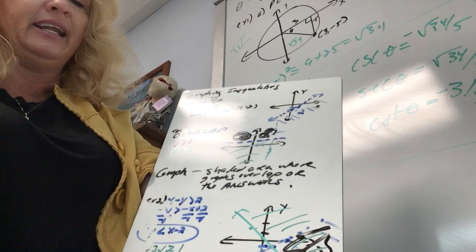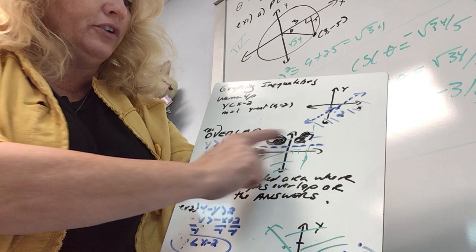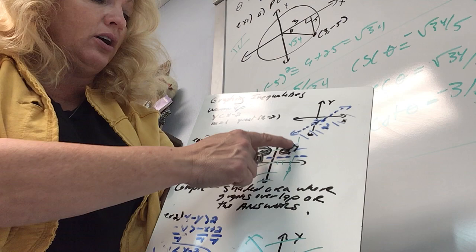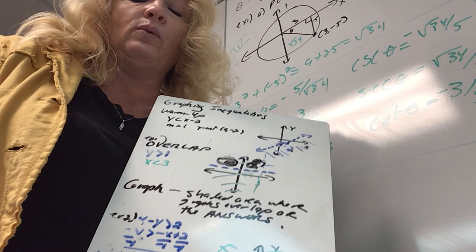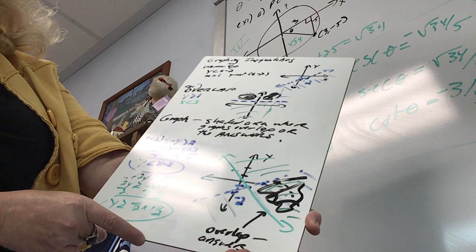I looked where the blue and green overlapped, and that is what I have shaded in black. This is why our graph answers our question — all of these places where they overlap, all of these points are answers. There are an infinite amount, so there's no way to list them. Your graph shows the answer.